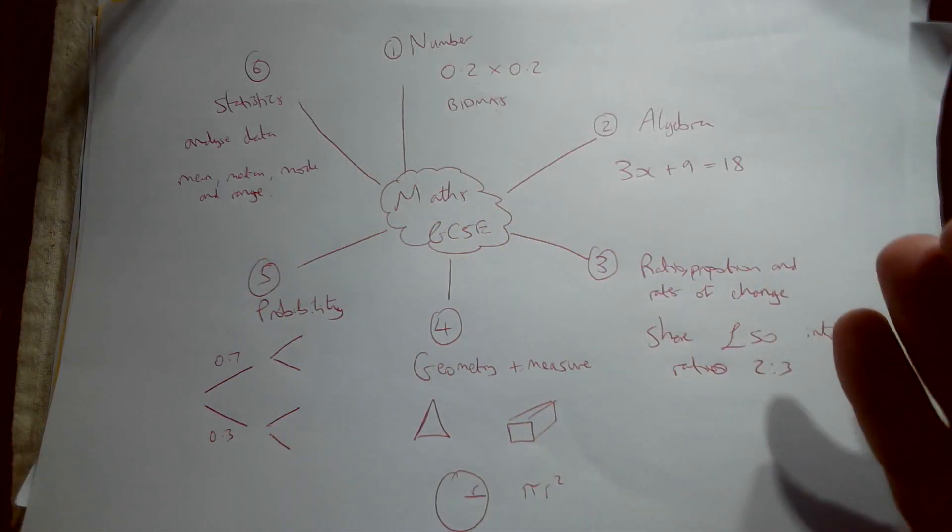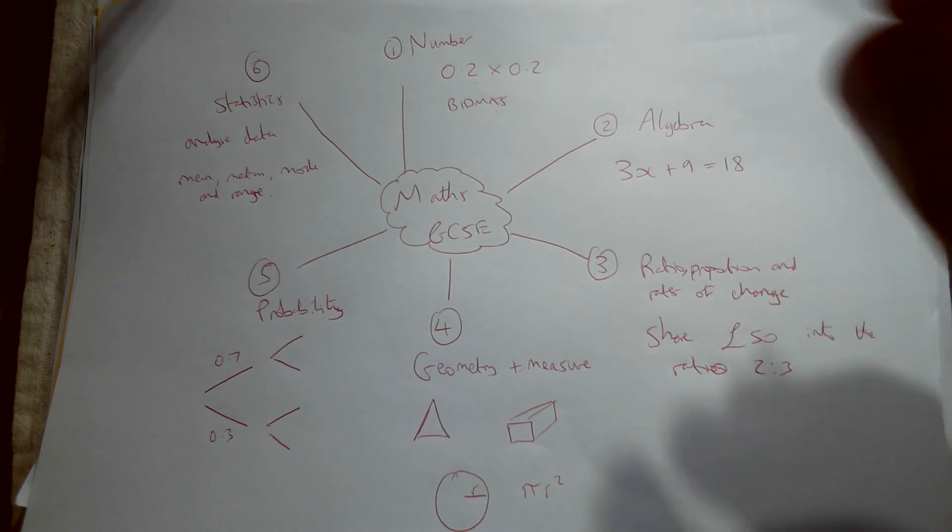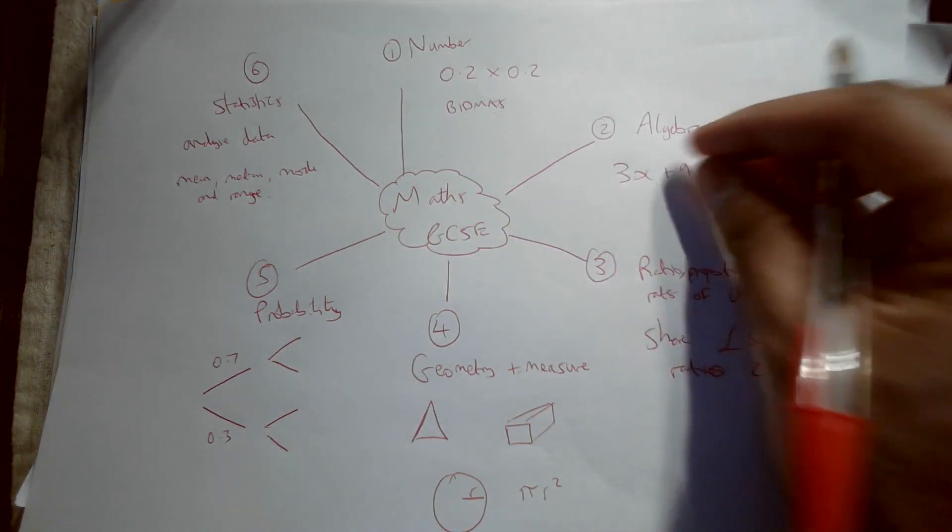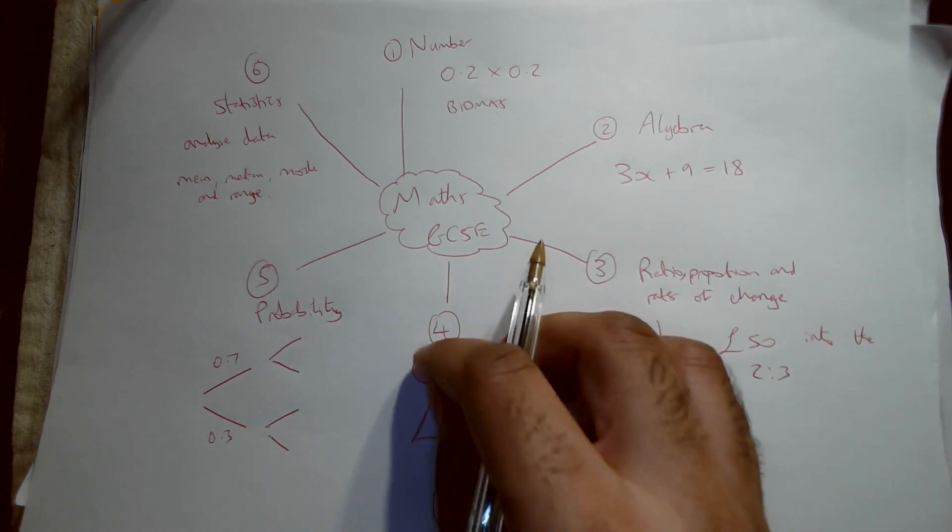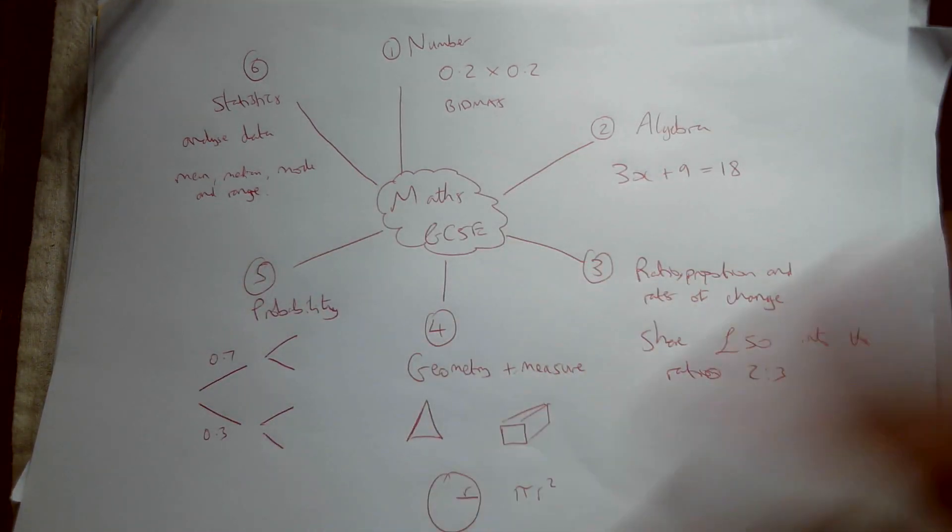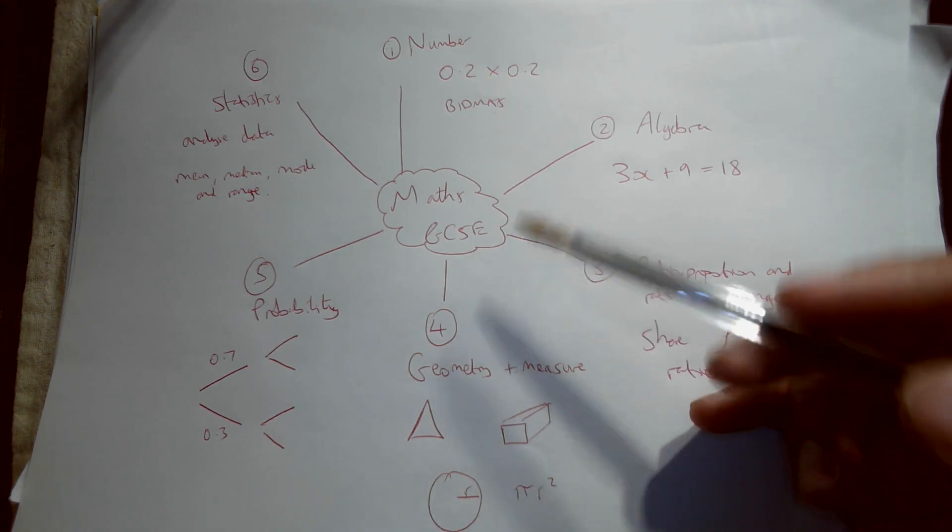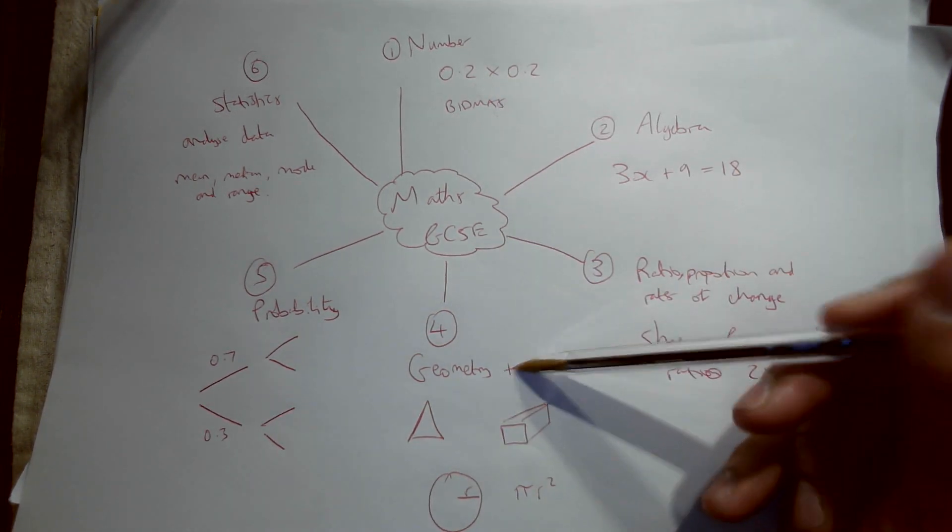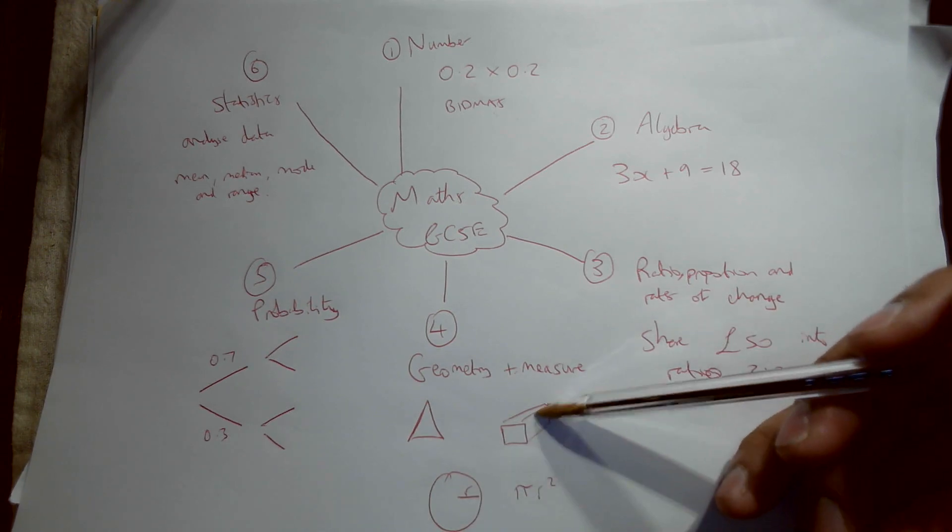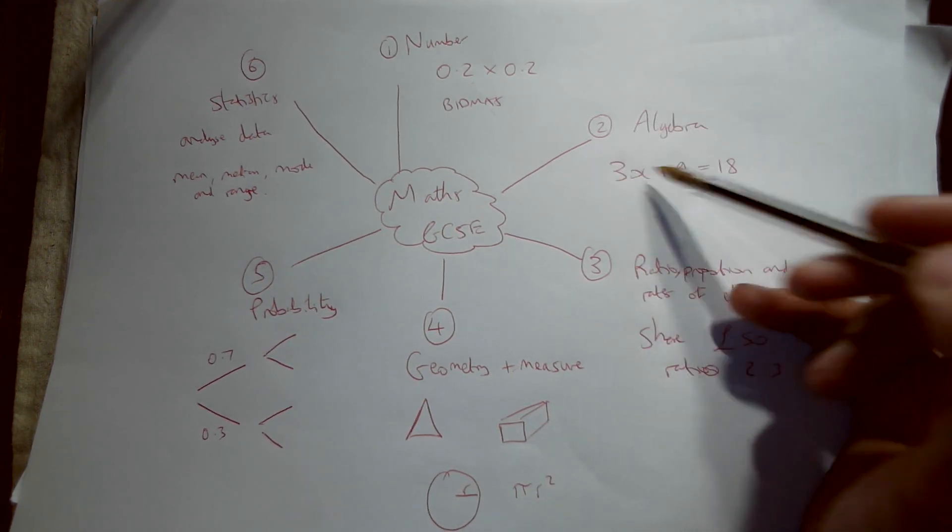It's important for you to do a lot of maths for your revision, but also for you to focus on the category that you are weakest in. So every single person will have a category that they're probably not as strong in. Some people might be stronger in number than they are in geometry and measure because they forget the formulas all the time, or they might not like algebra.